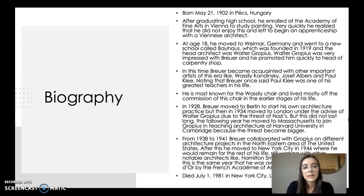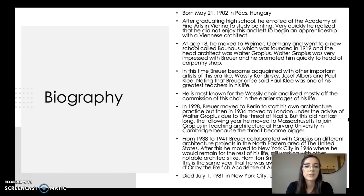He is mostly known for the Wassily chair and lived mostly off the commission of this chair in the early stages of his life. In 1928 Breuer moved to Berlin to start his own architecture practice, but then in 1934 moved to London under the advice of Walter Gropius due to the threat of the Nazis.